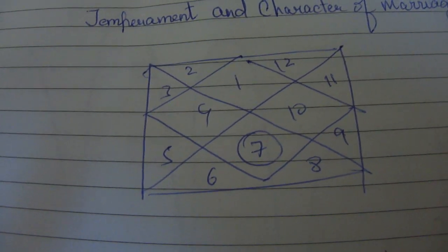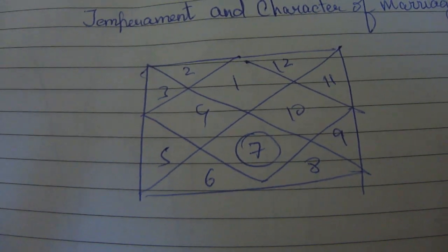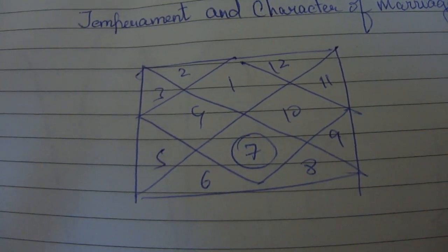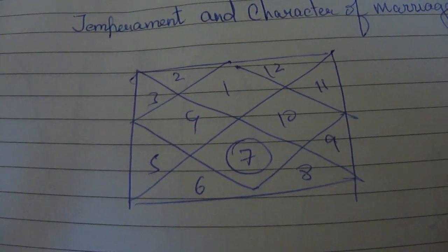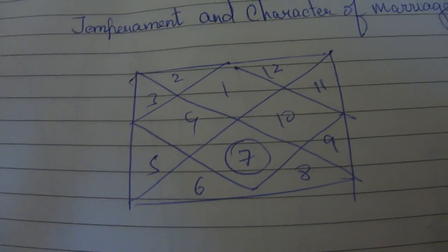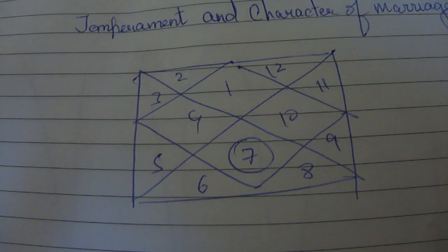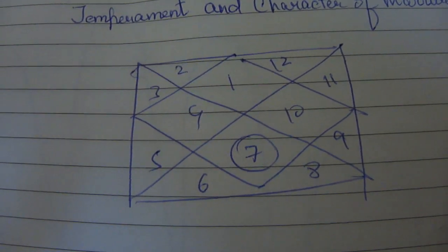Rahu present in the 7th house is not considered very good, but nevertheless the partner will be quite original, advanced mentally, can be a bit materialistic or artistic in nature. If Ketu is present here, again the partner will be very spiritual, religious and things like that.